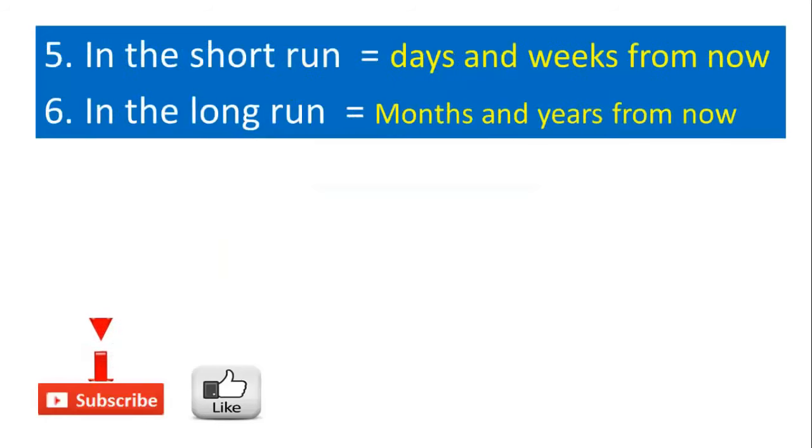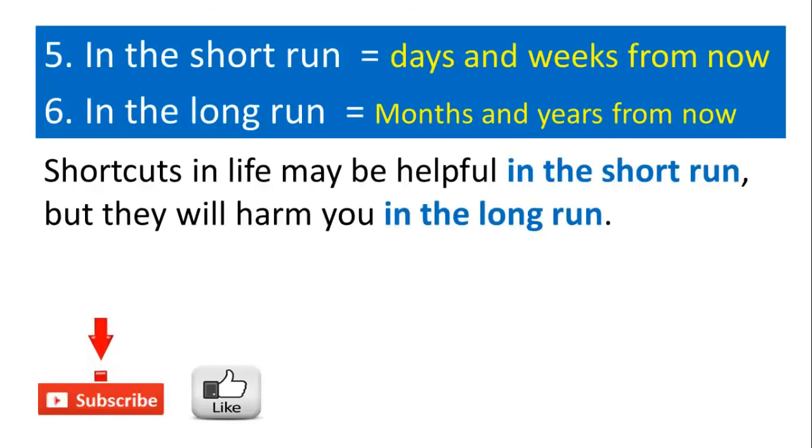The fifth one is in the short run, which means days and weeks from now. And number six is in the long run, which means months and years from now. Shortcuts in life may be helpful in the short run, but they will harm you in the long run.